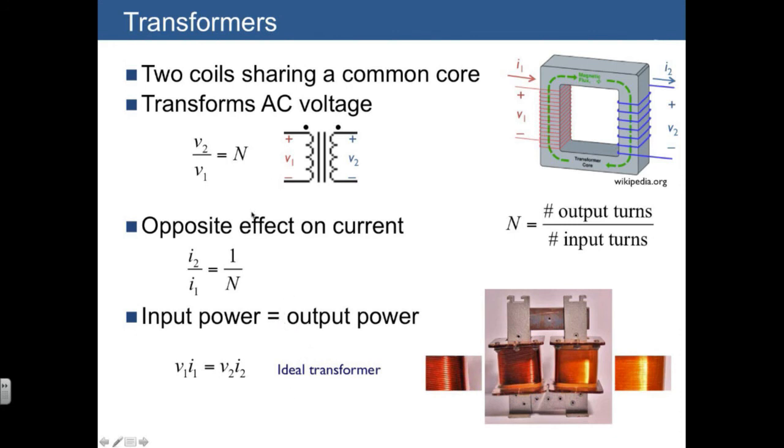So what is there to remember about a transformer? First of all, the quantity n refers to the secondary windings divided by the primary windings. The ratio between the amplitudes of the voltages is V2 over V1 is equal to n, and then there's an opposite effect for the currents.